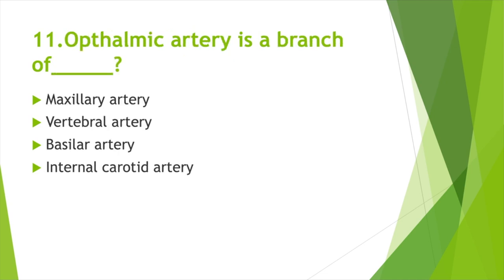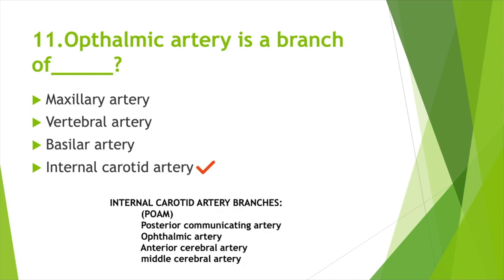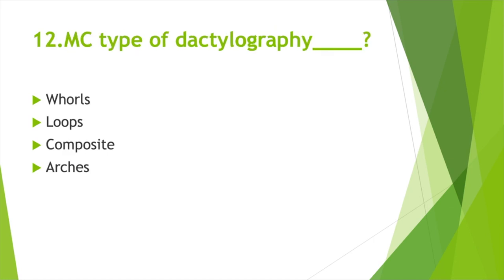The ophthalmic artery is a branch of — Option A: Maxillary artery, Option B: Vertebral artery, Option C: Basilar artery, Option D: Internal carotid artery. Answer: Option D, Internal carotid artery. Branches of the internal carotid artery — mnemonic POAM: P = Posterior communicating artery, O = Ophthalmic artery, A = Anterior cerebral artery, M = Middle cerebral artery.